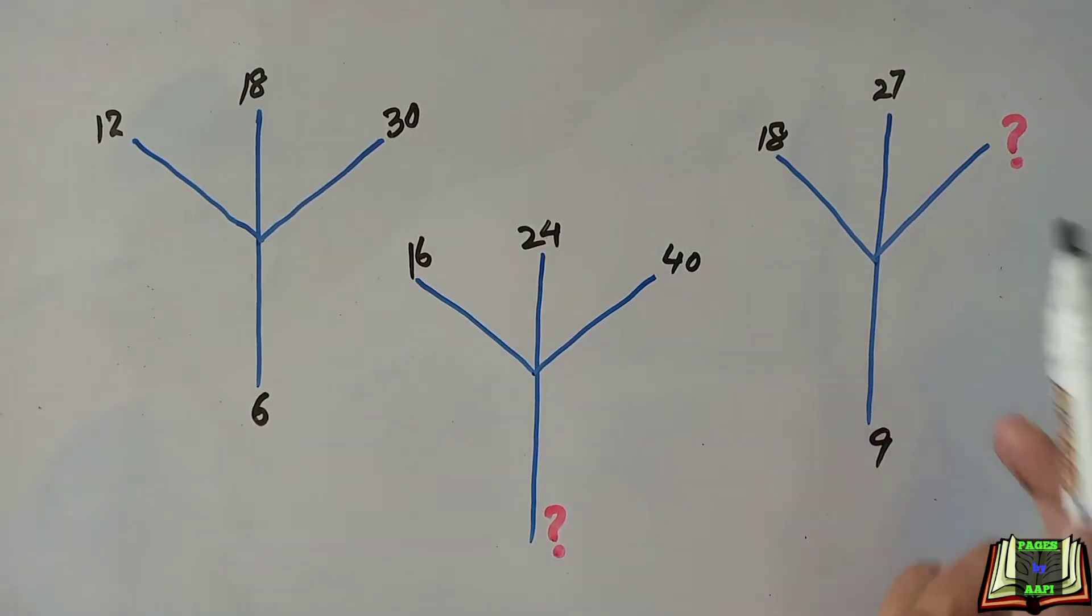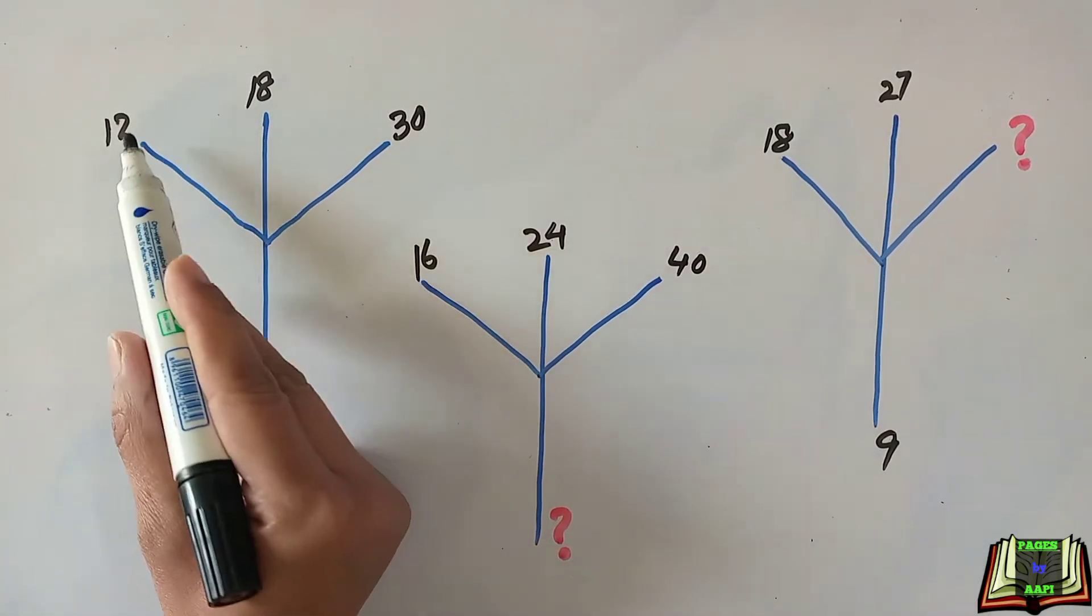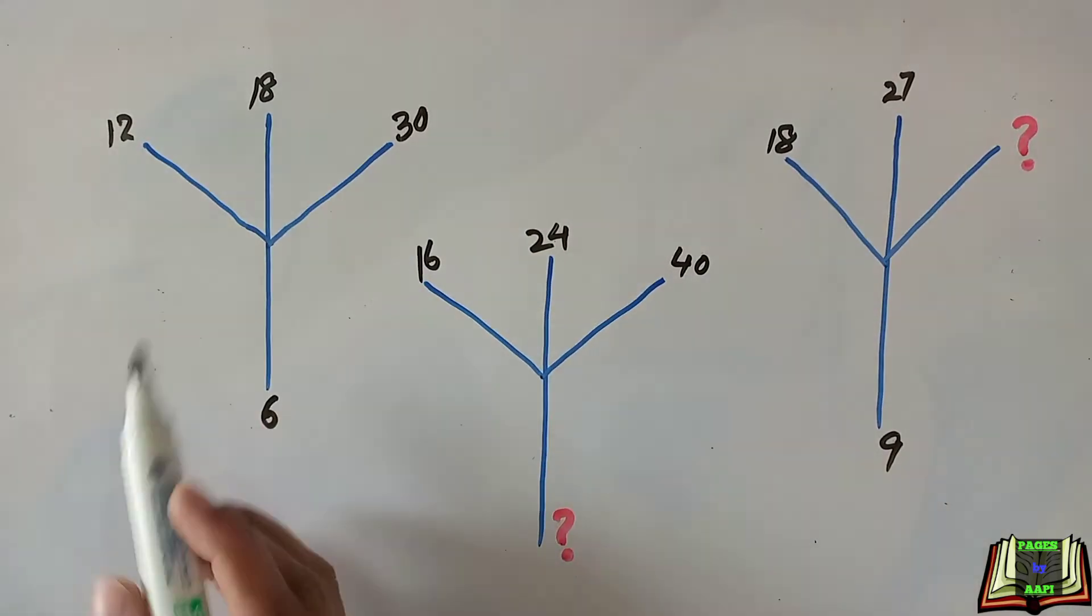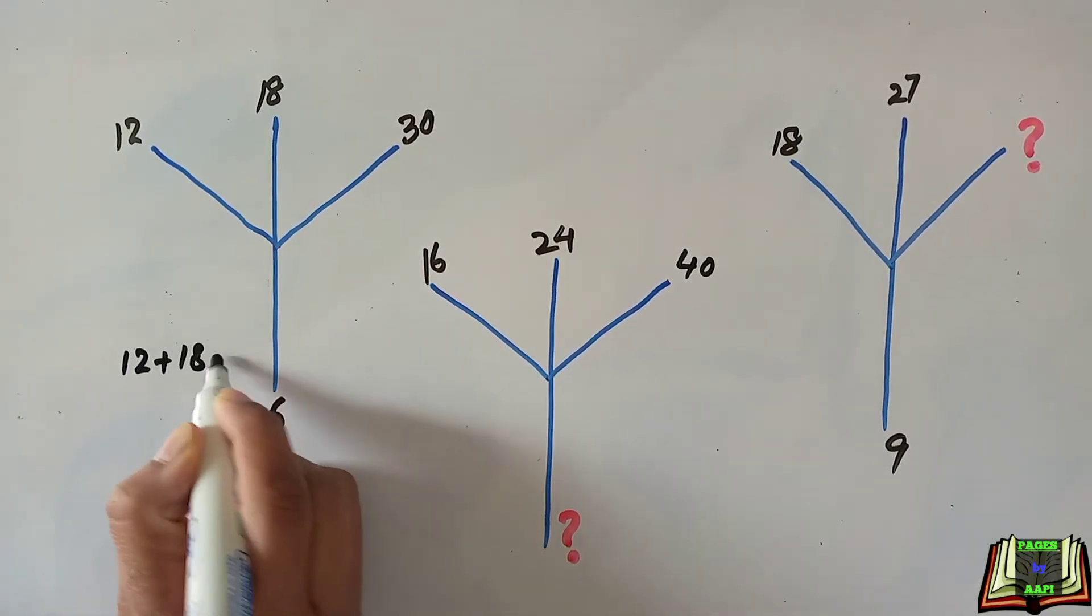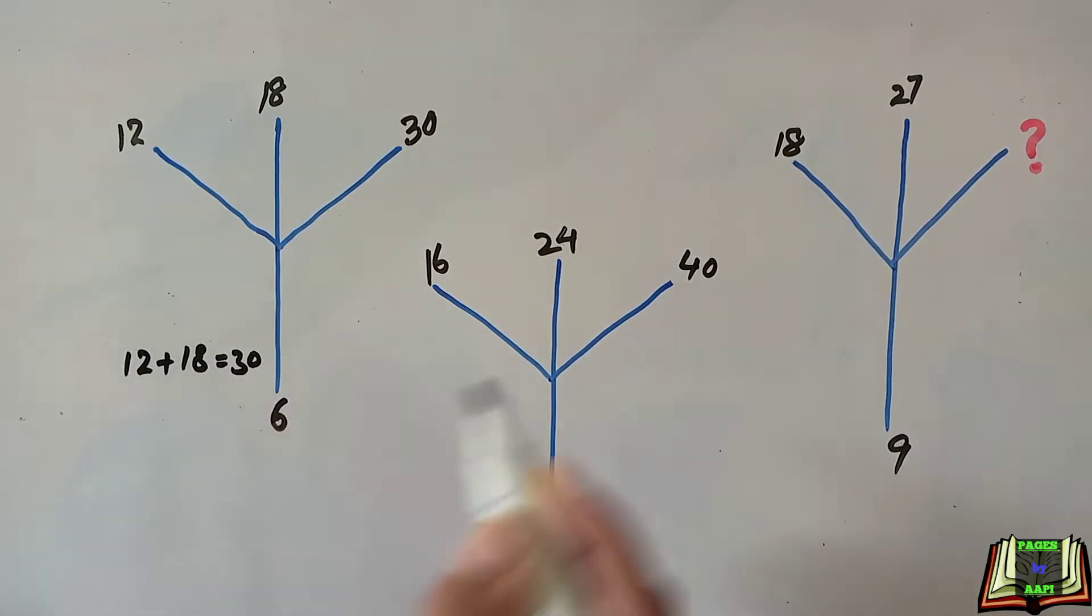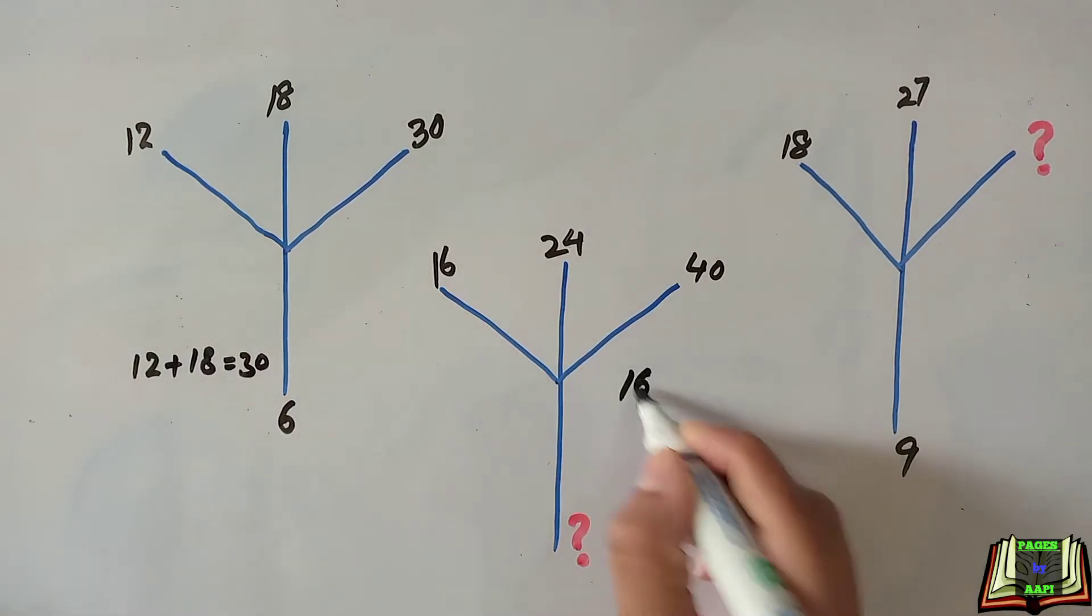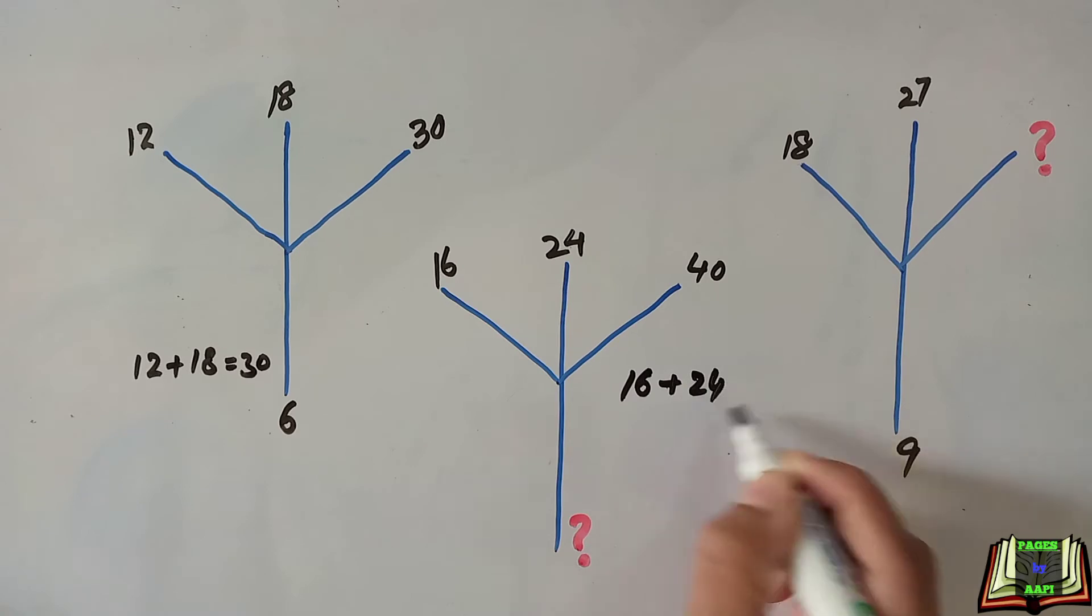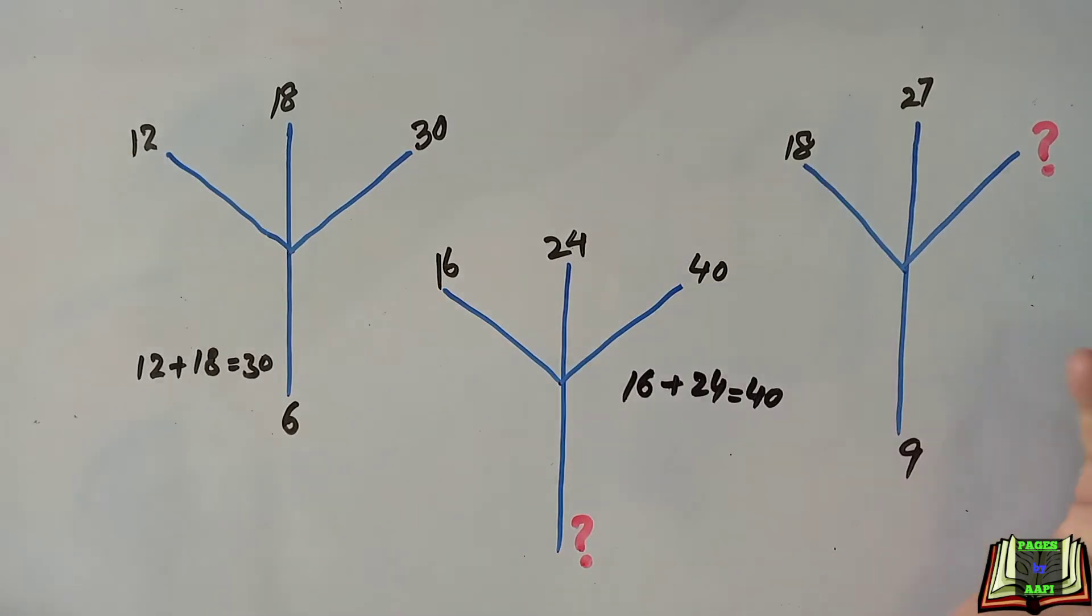So let's suppose if we add the first two numbers, 18 and 12, then we will get the third number 30. 12 plus 18 which is equal to 30. Similarly, if we add 16 plus 24 then we will get the third number which is 40. In the same way if we add...